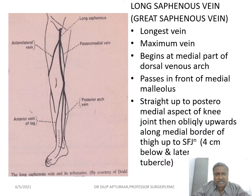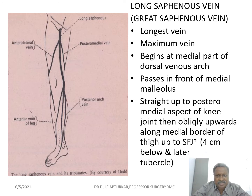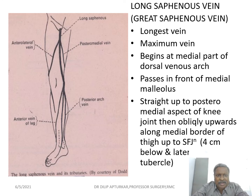Coming to the long saphenous vein, also called the great saphenous vein — it is the longest vein in the body. It begins at the medial part of the dorsal venous arch, also called the vein of Leonardo. It passes in front of the medial malleolus, up to the posterior medial aspect of the knee, then runs obliquely along the medial border of the thigh up to the saphenofemoral junction. This saphenofemoral junction is situated one inch below and lateral to the pubic tubercle, and it is joined by the posterior medial vein, anterolateral vein or accessory saphenous vein, posterior arch vein, and anterior vein of the leg.